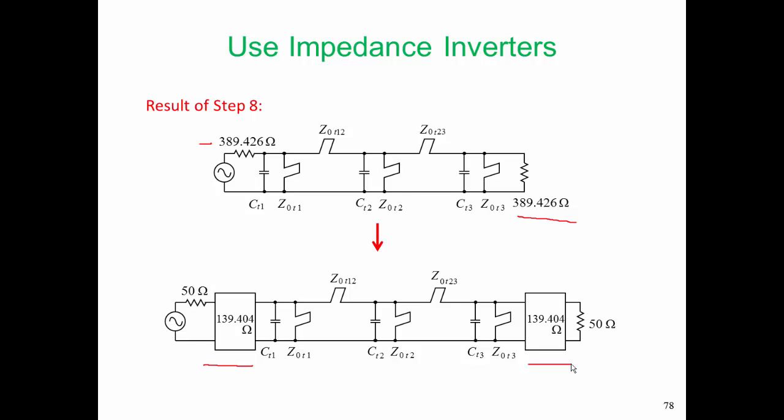Now, these inverters could be as simple as quarter wavelength long lines with a characteristic impedance of 139 ohms, but there are other ways to do that.